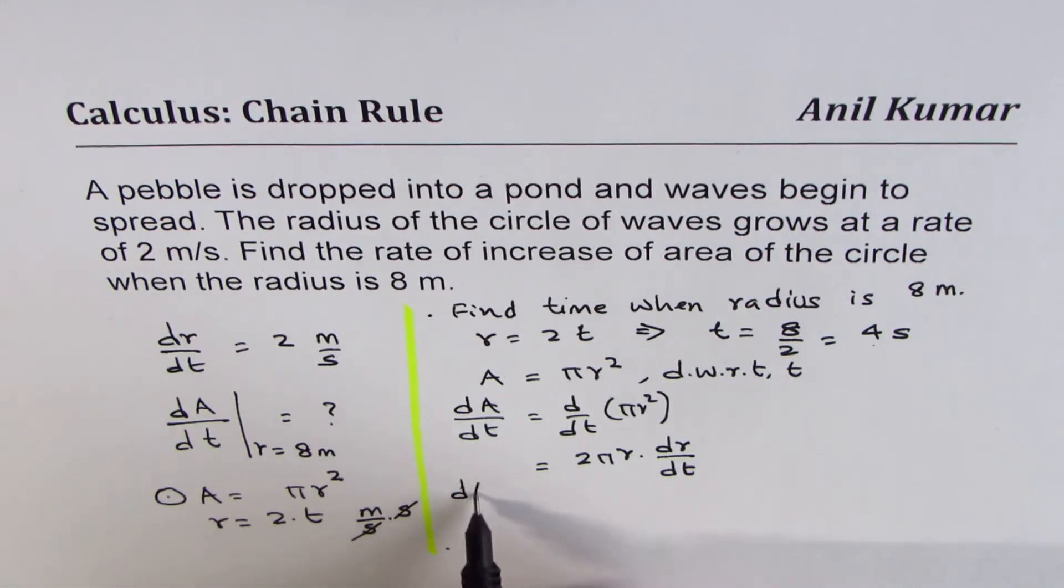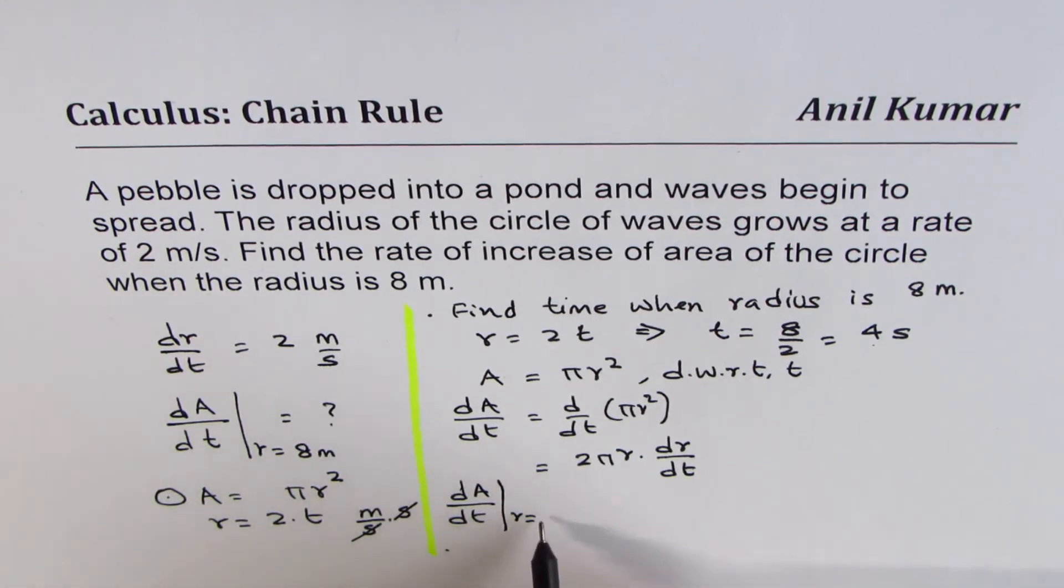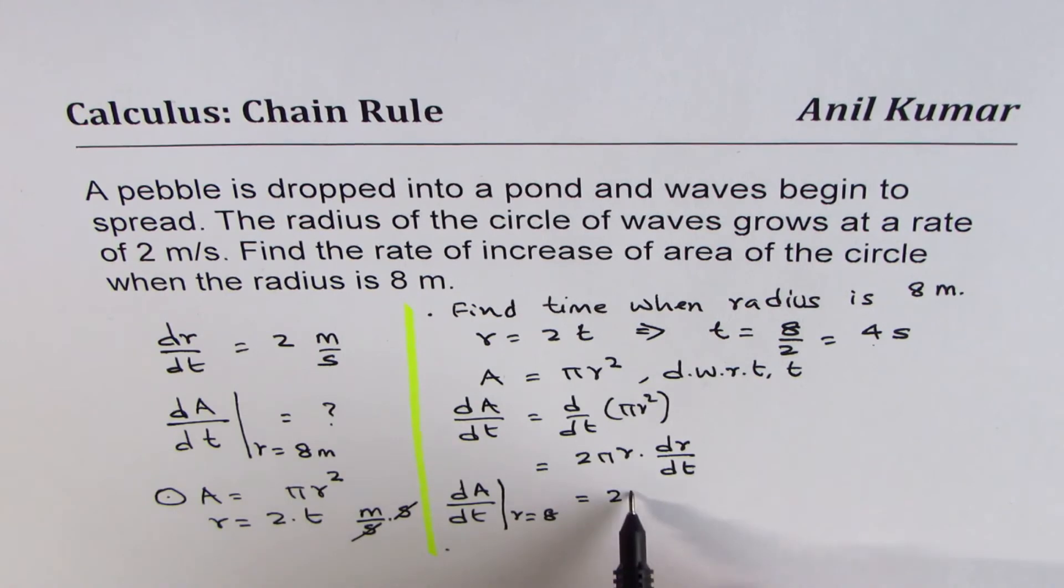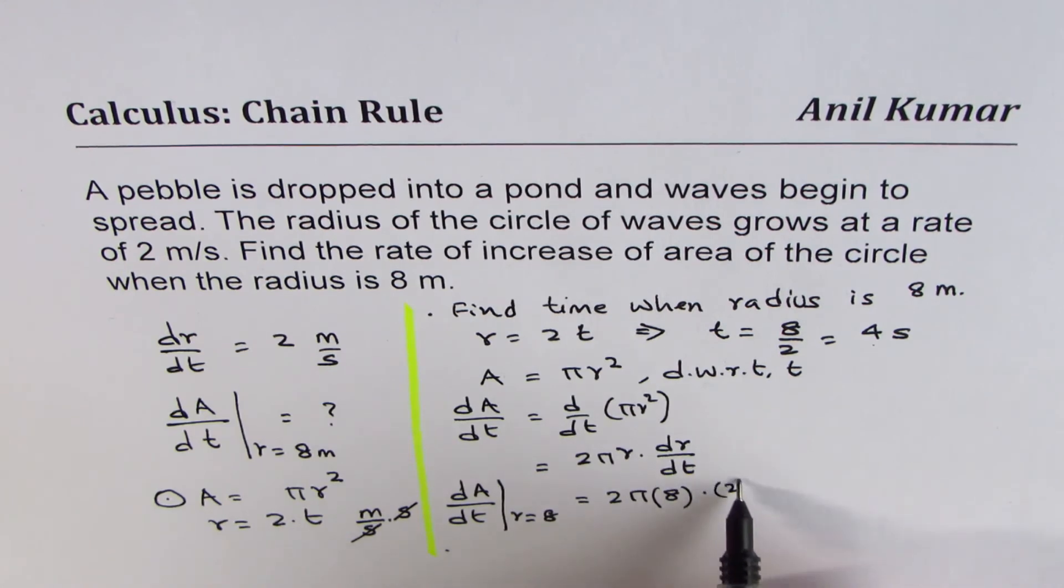So what is the rate of change of area when r is equal to 8? Since in our equation, we don't really have t here, we could actually substitute r equals to 8 and get the answer. dr/dt is constant, 2 meters per second. So we get 2 times pi times 8, which is the radius, and dr/dt is given to us as 2.